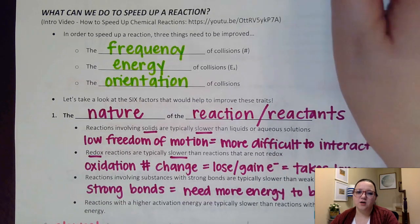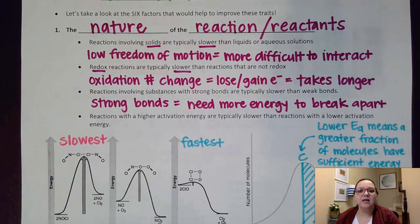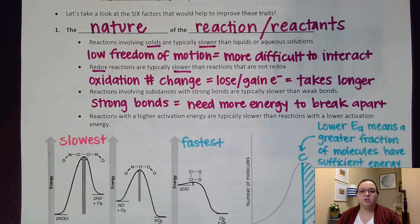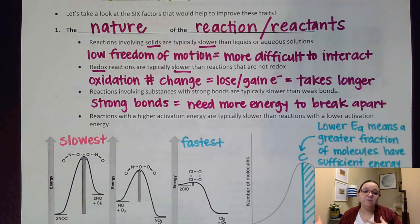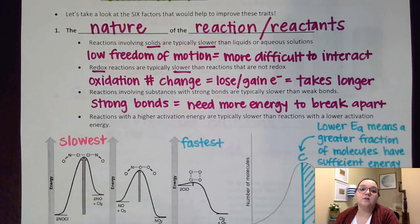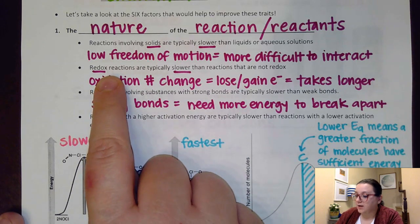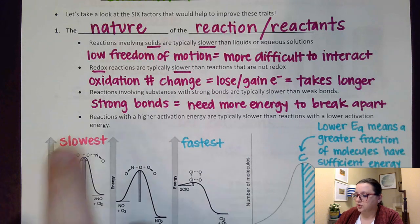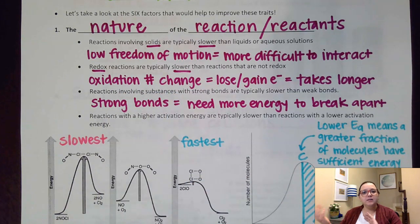The first factor we're going to talk about was not mentioned in the video, and that is just the nature of the reaction itself - what kind of reactants do I have present? This is a little bit different than taking a singular reaction and trying to speed it up. Here what we're trying to do is say, if we have two different reactions, what might cause one reaction to be faster than another? First off, if we have reactions that involve solids, those tend to be a little bit slower. The reason why is that solids have really low freedom of motion in their particles, so it's more difficult for those particles to interact with each other and get collisions. Also, redox reactions are typically slower - in a redox reaction, oxidation numbers change, and that involves a loss and gain of electrons, and when you have to transfer those electrons around, that can take longer.